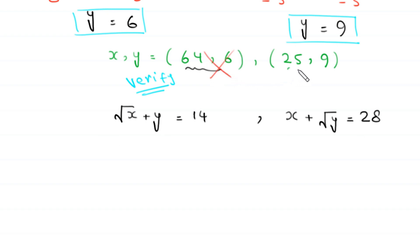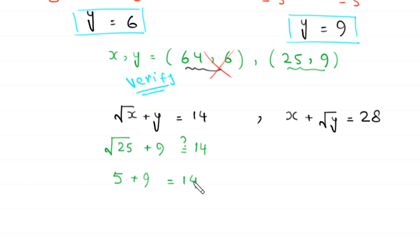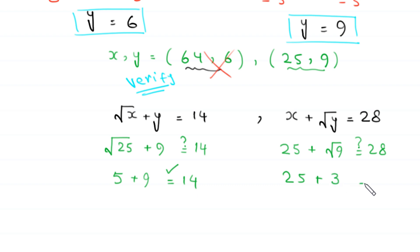Now we verify the pair 25 comma 9. Root 25 plus 9 equals 5 plus 9 equals 14 — this is true. And 25 plus root 9 equals 25 plus 3 equals 28 — this is also true. So the pair x comma y equals 25 comma 9 is the valid solution.